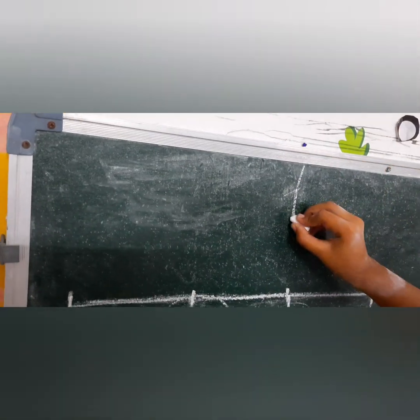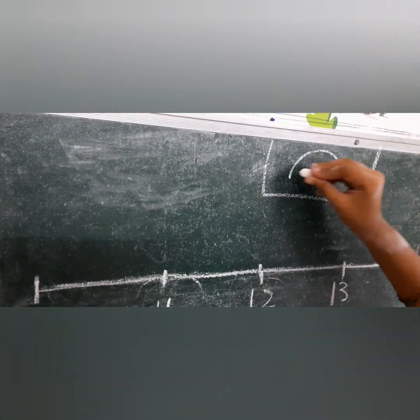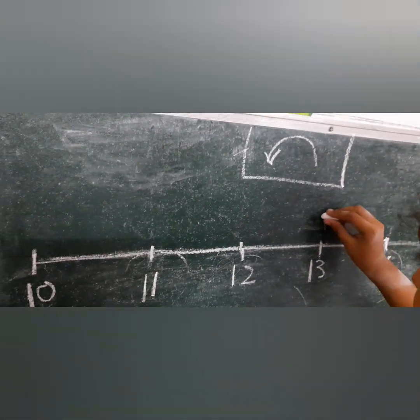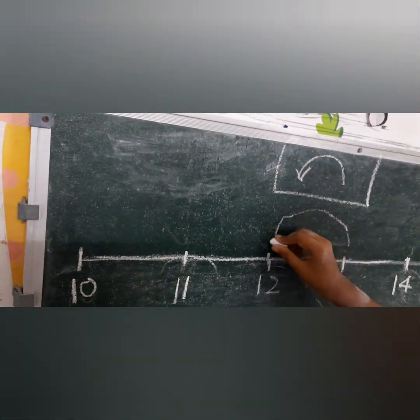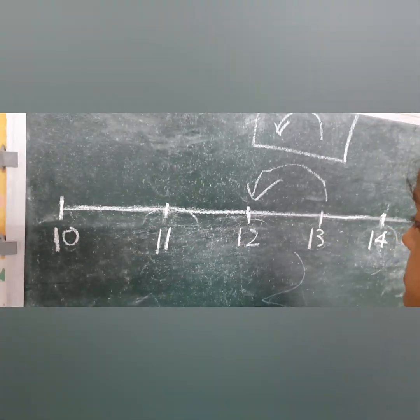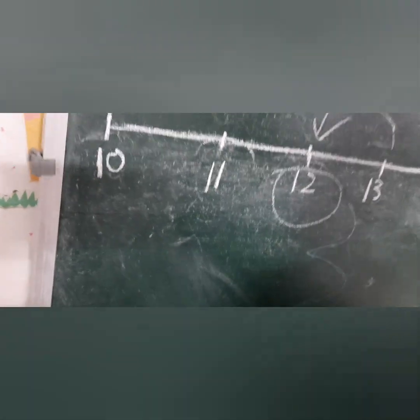Now draw a before arrow here. Before — very good. What comes before 13? Draw the arrow and tell me the answer. Circle the answer. It is? 12 — very good.